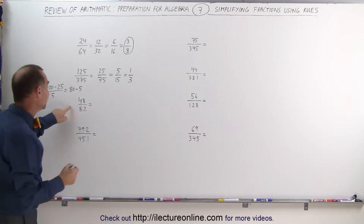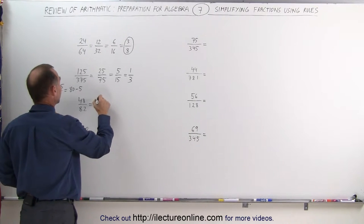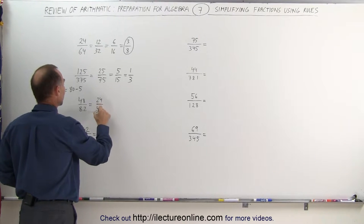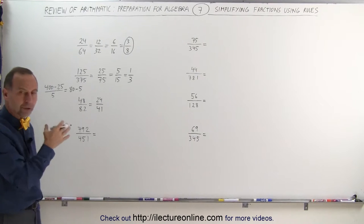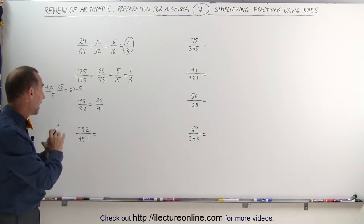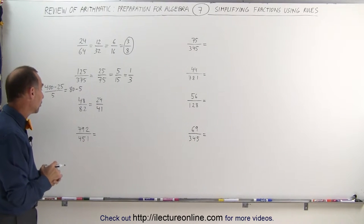Again, these two numbers are even. I can divide 48 by 2, that gives me 24, and 82 divided by 2 gives me 41. Now I take a look at number 41, I realize, wow, 41, that was one of those prime numbers. I cannot simplify it anymore, that's as low as I can go.